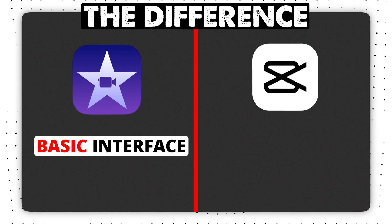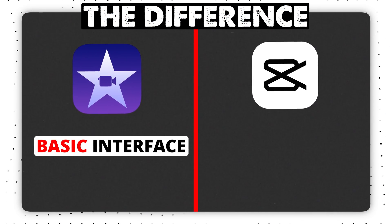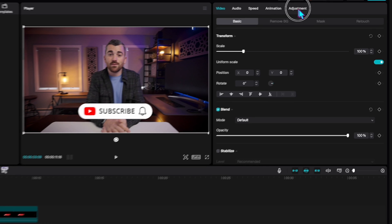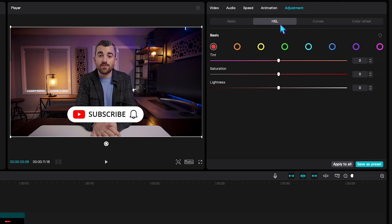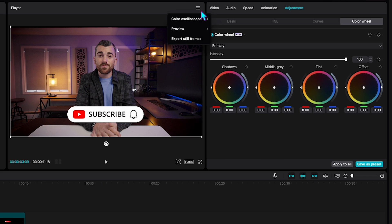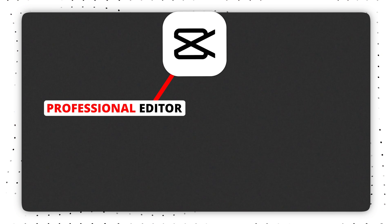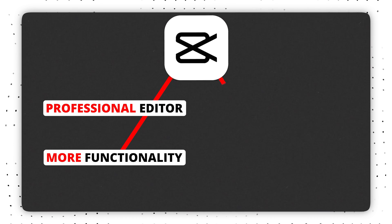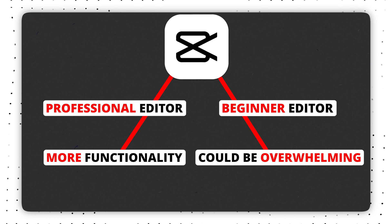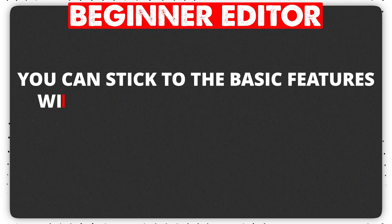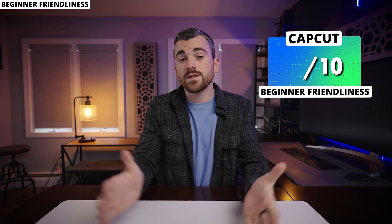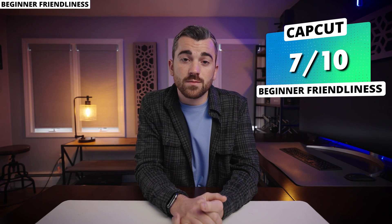Unlike iMovie, which had an extremely simple interface, CapCut takes it much further with a significantly higher level of control for each major category of tools. Just the color adjustment tab alone has four subtabs, each with their own complex interface and an option to bring up color oscilloscopes. As a professional video editor, I love this level of functionality in a free editor, but for the ultra beginner it could come off as a little overwhelming. We're giving CapCut a 7 out of 10 for beginner friendliness.